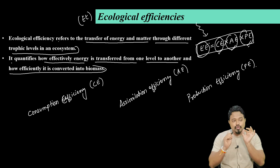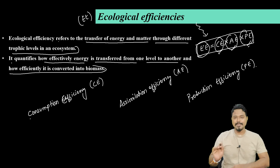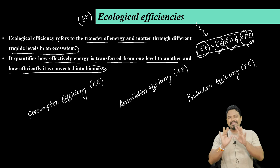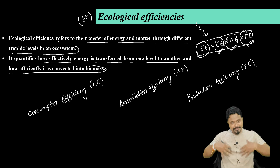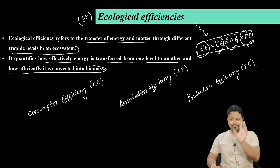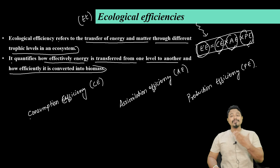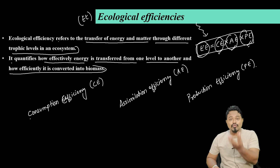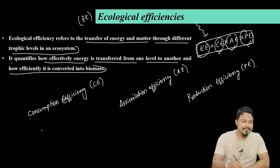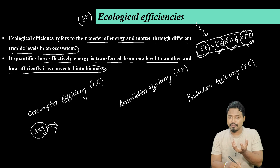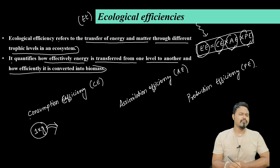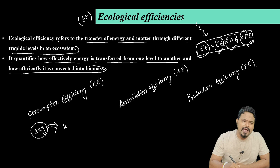Consumption efficiency refers to how much an organism at a higher trophic level consumes. For example, if I eat 1 kg of meat, that is the ingestion — my consumption efficiency. Out of 1 kg of meat, I may consume 250 grams. So consumption efficiency relates to what I eat from what is available.